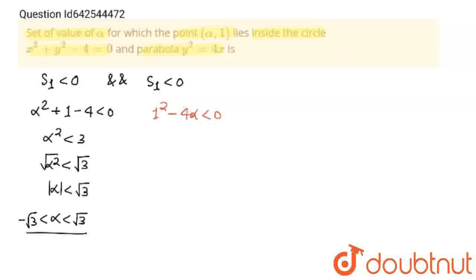What we will get: I am going to take 4 alpha to that side. We'll get 1 less than 4 alpha. Dividing by 4, here you will get 1 upon 4 is less than alpha, which means that alpha is greater than 1 upon 4.